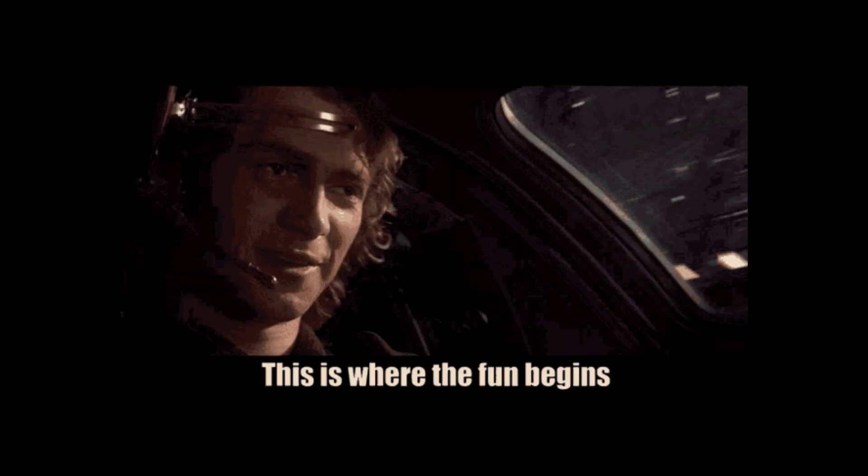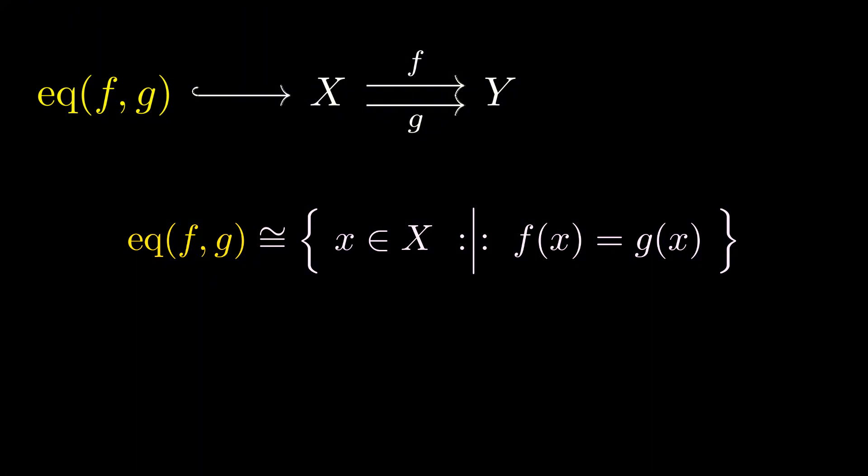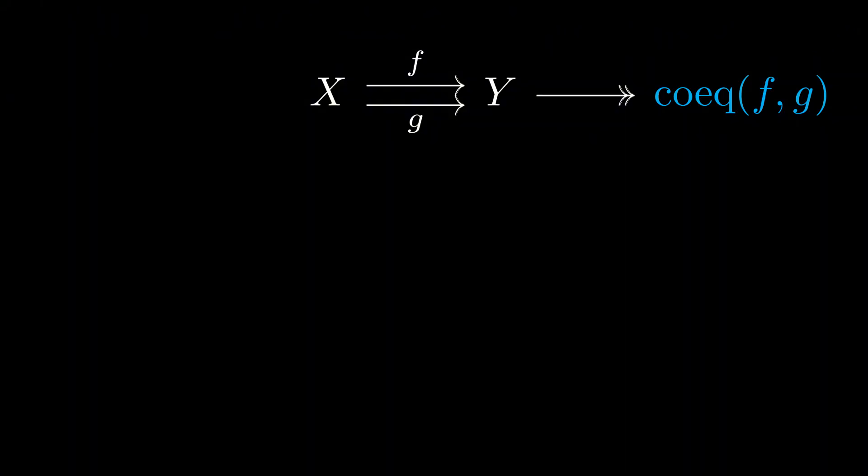Now, coequalizers are a bit more conceptually demanding. Suppose we have two functions f and g mapping from a set x to the set y. Let's recall first that the equalizer corresponds to the set of all elements of x whose image in y via f and g are the same. In other words, f of x equals g of x. Dually, we only know how to describe the coequalizer of these two functions in terms of its power set. Specifically, the subsets of the coequalizer correspond to the subsets of y whose preimages in x via f or g are the same.